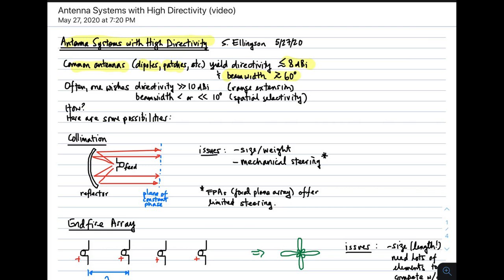This isn't always suitable for every application. Often one wishes directivity to be much greater than 10 dBi, perhaps as much as 30, 40, 50, or 60 dBi. That would be desired for range extension. The more power you can focus in the desired direction, the longer the range of the link you're trying to establish or maintain can be.